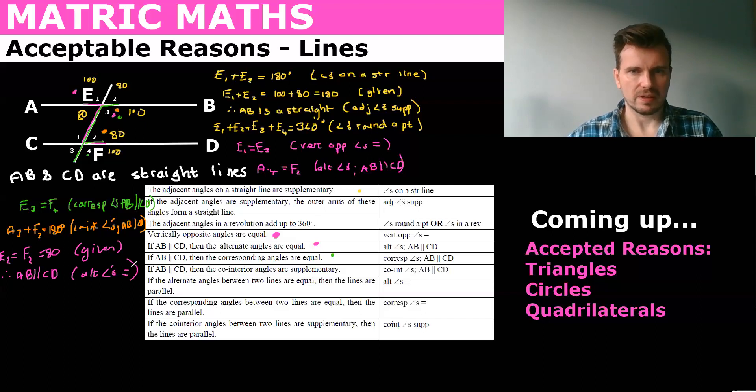Now let's look at your corresponding so that was the one in green. So we would say that E3 equals F4 so the green ones equals 100 that's would be you would say given and then you would say therefore AB parallel to CD and that would be corresponding angles equal.